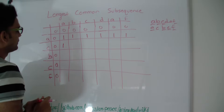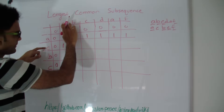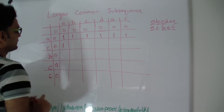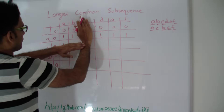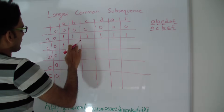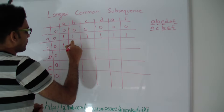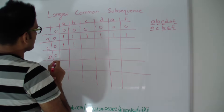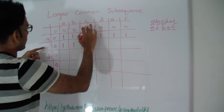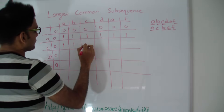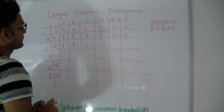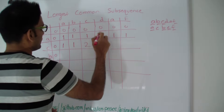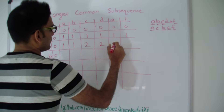Where did we get that one from? From the top. If these two characters are not the same, then the length of the longest common subsequence will be the max of the cell at the top or the cell at the left. Since c and b are not the same, the value is max of one and one — so one. But here we have string a,b,c and a,c — c and c are the same, so the length will be one plus whatever the best we did between a,b and a, which is one. So one plus one equals two.